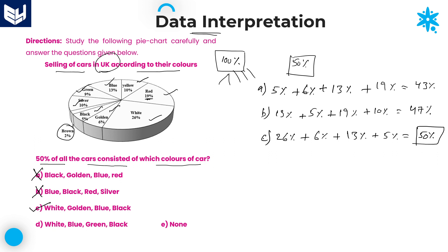Sometimes you get the answer on the first try; other times you check all options. There is no particular pattern — you can go top to bottom or bottom to top. Each option takes hardly 10 to 15 seconds, so within less than 60 seconds you will get the answer. That is more than enough for any competitive examination or campus placement. Option C is the right answer.